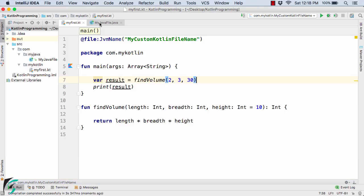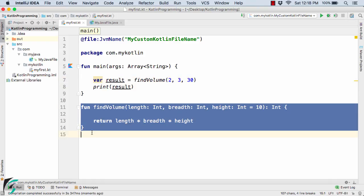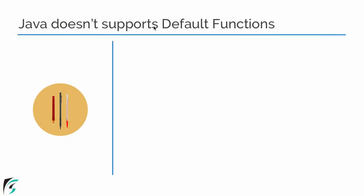What about the Java file? Can we call the default function from our Java file? The answer is both yes and no. Java doesn't support default functions — if you are a Java developer you must be aware that we don't have any concept of default functions in Java. So how can we call default functions present in the Kotlin file from the Java file? For that we have the annotation @JvmOverloads, which gives rise to the interoperability of Java and Kotlin files.